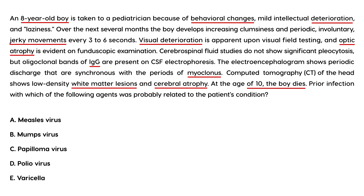CT of the head shows low-density white matter lesions and cerebral atrophy. At the age of 10, the boy dies. This is again a case of SSPE, and the question asks which childhood condition this child most likely had. The answer is measles, which is choice A.